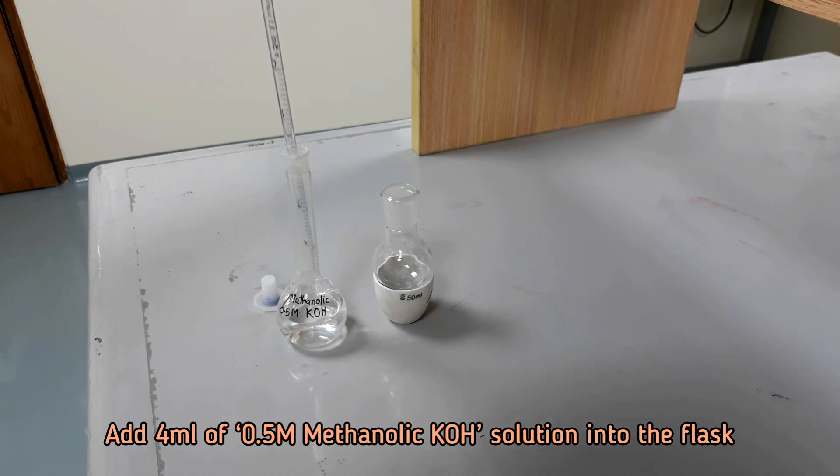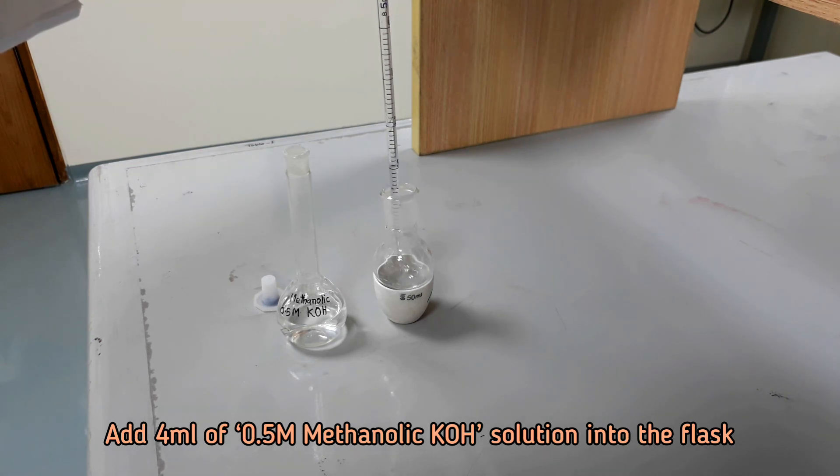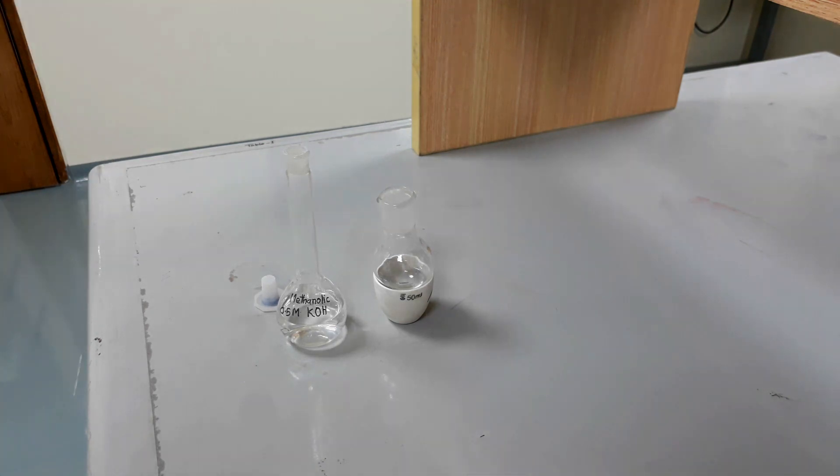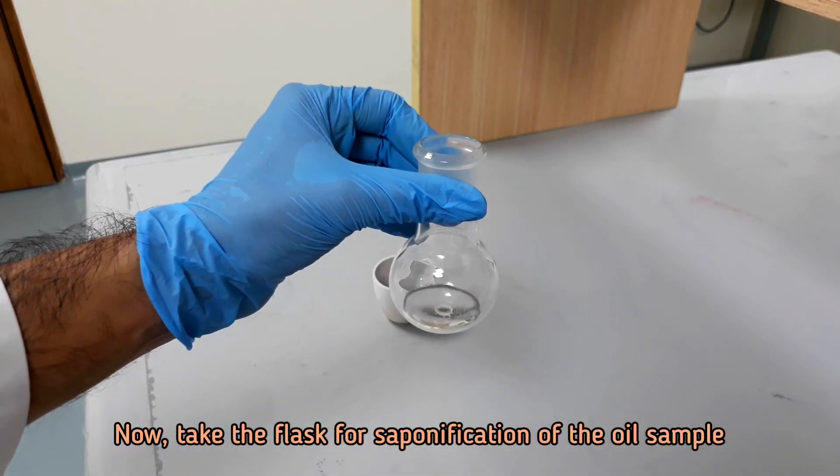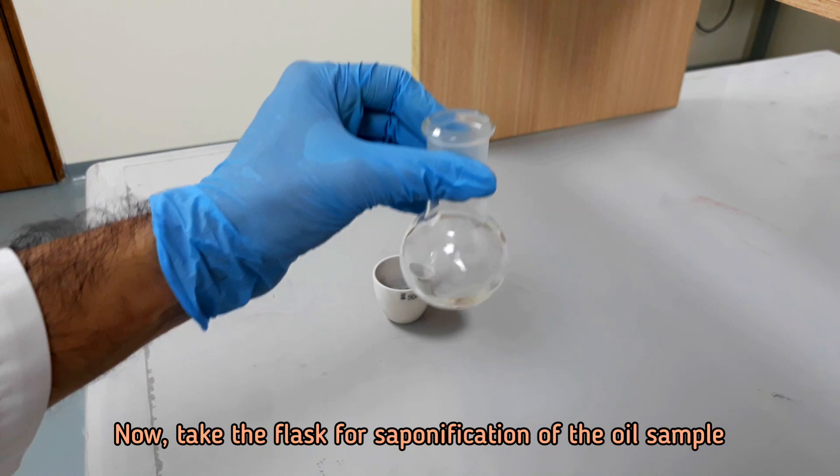Add 4 ml of 0.5 molar methanolic potassium hydroxide solution into the flask. Now take the flask for saponification of the oil sample.